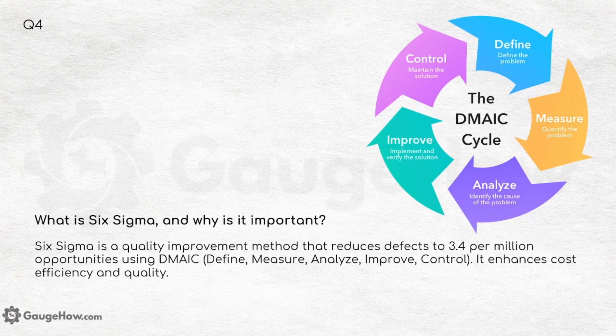Looking at the DMAIC cycle: control means maintain the solution, define means identify the exact problem, measure means quantify the problem, analyze means identify the cause of the problem, and improve means implement and verify the solution. It starts with define and ends at control, but the cycle keeps on revolving.